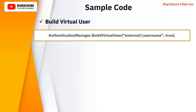Now let's see the sample code. First thing is to build the virtual user — for all these activities you are going to use the AuthenticationManager class. AuthenticationManager.BuildVirtualUser is the method which will build your virtual user. You pass in the domain — 'external' is your domain — and the username is the unique ID which you received from the external service. This is the programmatic code to build the virtual user.